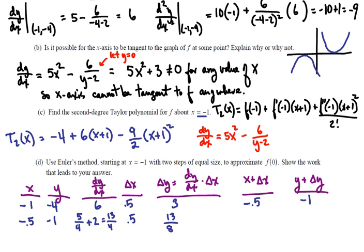And our new x value is 0, which is where we want to be to end up. And the new y value is negative 1 plus 13 eighths. So 8 eighths will get us back to 0. And we'll still have 5 eighths left over.